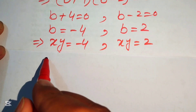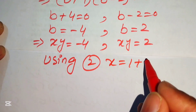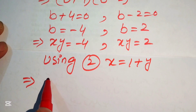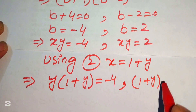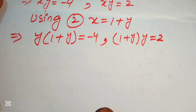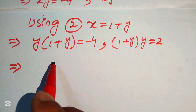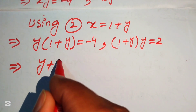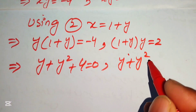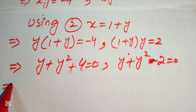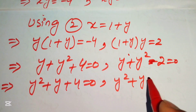Back-substituting using equation 2 (x = 1+y): for xy = −4, we get y(1+y) = −4, i.e., y² + y + 4 = 0. For xy = 2, we get y(1+y) = 2, i.e., y² + y − 2 = 0. We now solve these two equations separately.